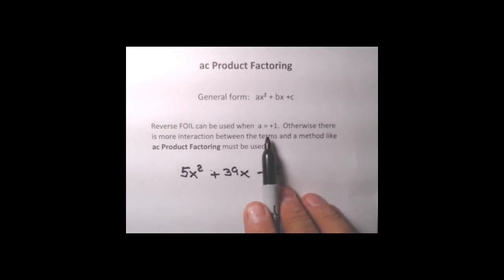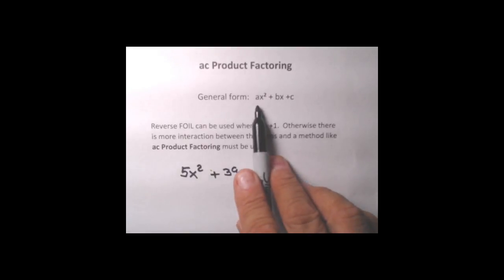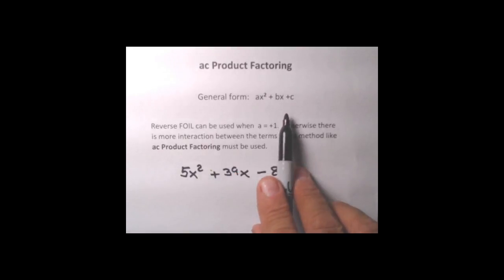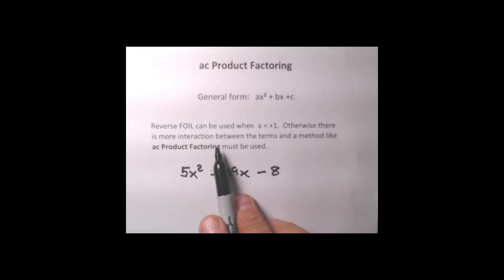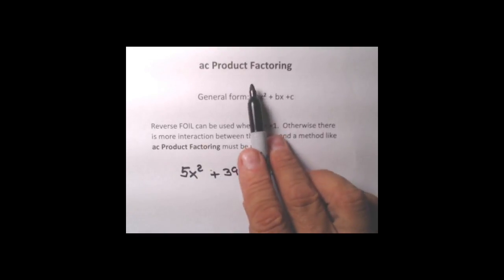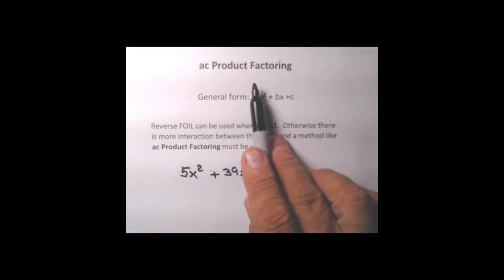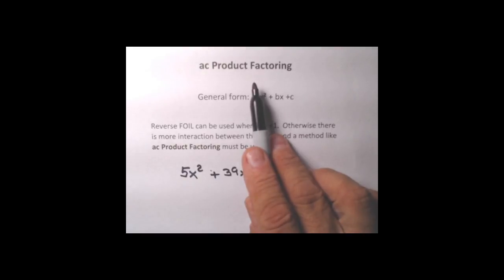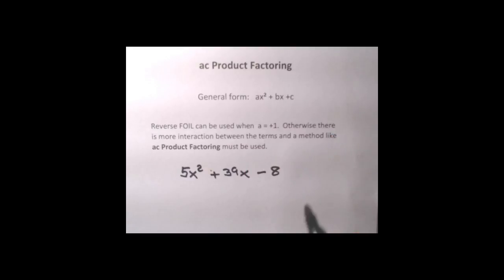Reverse FOIL is a lot more direct and simpler, so we always want to use that when we can. But if the leading coefficient is not plus one, there's more interaction going on, and you have to use some kind of factoring method like AC product factoring. People have thought up lots of different versions for tackling these more complicated quadratics. I like AC product because it makes use of many reverse FOIL concepts and finishes up with factor by grouping, which we already know. Let's look at a beginning example of how this works.